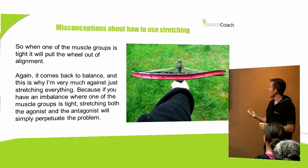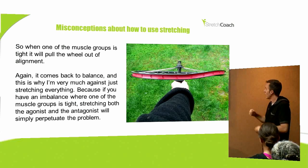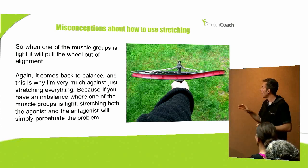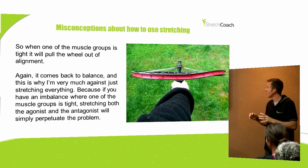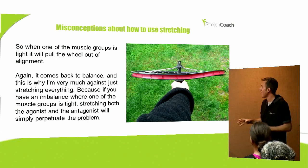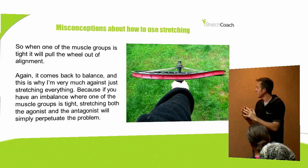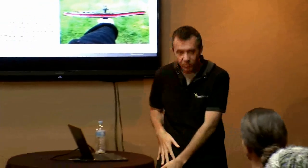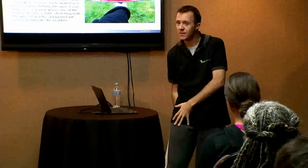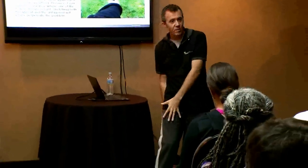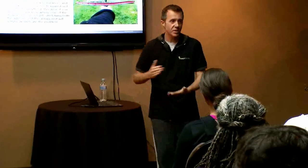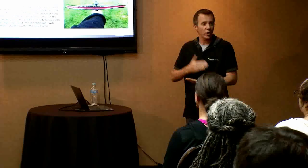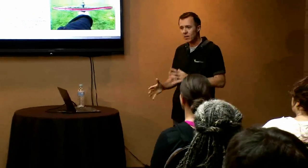When you have one muscle group that is tight, it pulls the wheel out of alignment. It comes back to balance. This is why I'm very much against the idea of a full body routine or just stretching everything. Because if you do have an imbalance where one of the muscle groups is tight, stretching both of those muscle groups will just continue to perpetuate the imbalance. So if you have very tight quads and hip flexors and relatively loose hamstrings, if you just stretch both muscle groups, you're not going to fix the problem. That's why it's so important to be able to self-assess, work out which muscle groups you need to stretch, and then work on those ones.